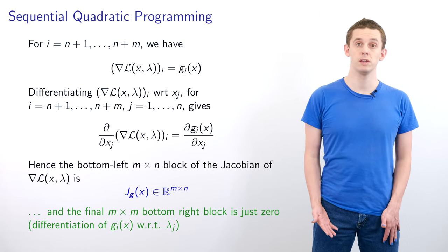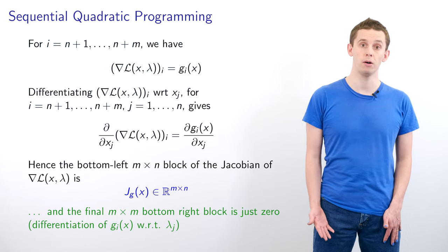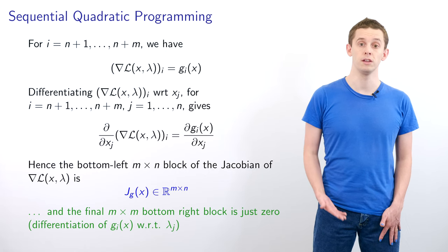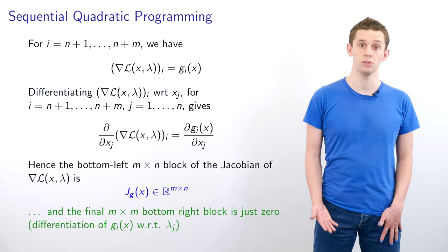Finally, we can see that the bottom right m×m block is just 0 because the differentiation of g_i(x) with respect to λ_j will just evaluate to 0.